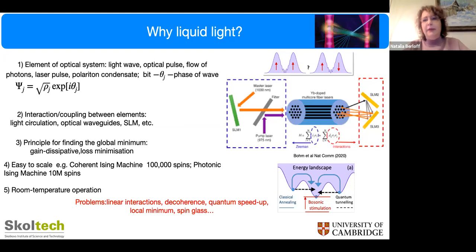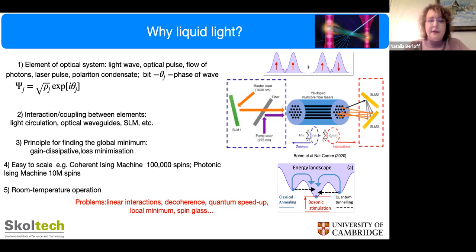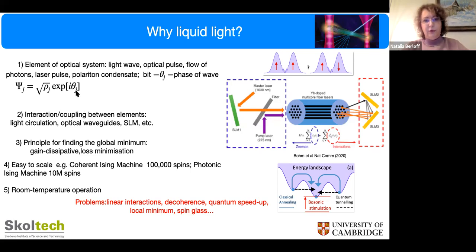Why liquid light? Why optical computing? In optical systems, the natural element is the light wave or optical pulse — for us, the polariton condensate, where each element is represented by the phase of the wave. We describe each element by a complex function of time: at a fixed point it's a complex number with amplitude and phase, and the phase becomes the variable for the computer.